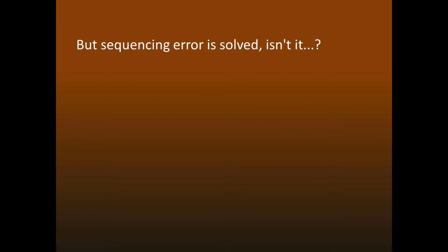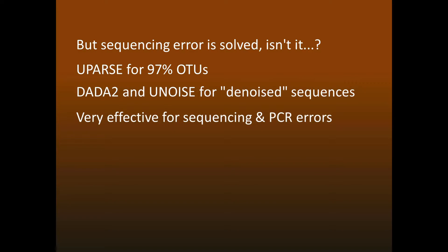Now you may be thinking that these problems are well-known, and they have been solved. It's true that state-of-the-art algorithms, including UPARSE for 97% OTUs, and denoisers such as DADA2 and UNOISE, do a good job of removing sequencing and PCR error. However, none of these algorithms address crosstalk, and all of them discard low-abundant sequences.